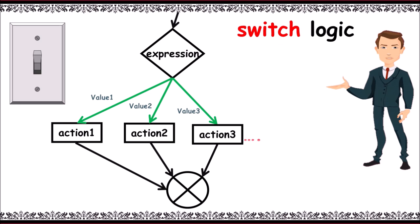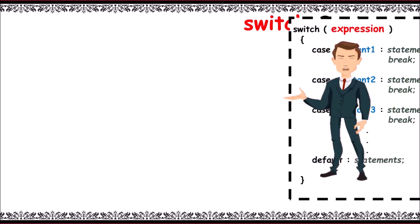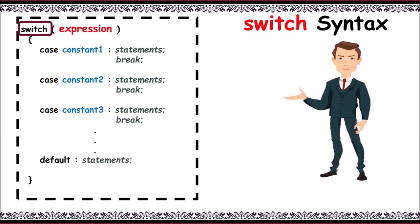Now the switch syntax contains a keyword 'switch', and in brackets we have an expression. This expression gives a constant value. Each case is associated with a constant value. If constant 1 is generated by expression, then that particular case is executed and these set of statements are executed.